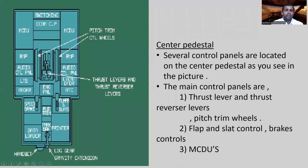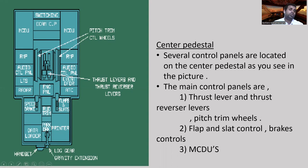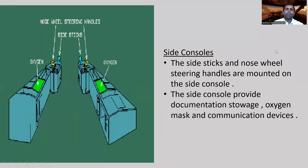Here is the center pedestal. On the center pedestal you can see the thrust levers, thrust reversers, pitch trim control wheels, and landing gear gravity extension handle and handset. Several control panels are located on the center pedestal: thrust and thrust reverser levers, pitch trim wheels, flap and slat controls, brake controls, and MCDUs.